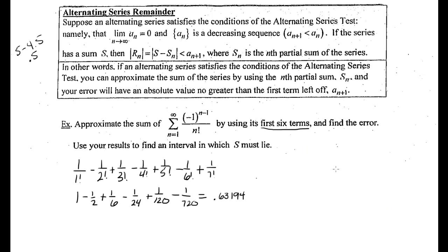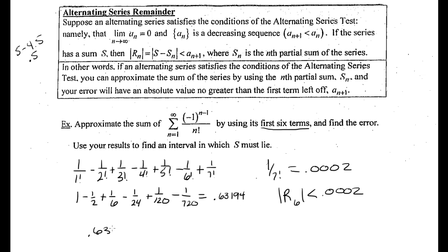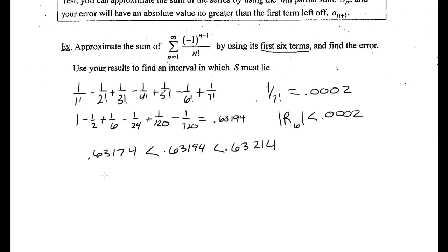Using the calculator, 1 divided by 7 factorial gives us that the error is going to be less than 0.0002. So the absolute value of the remainder of the sixth term is less than 0.0002. It also says to use the result to find an interval in which S must lie. If we subtract 0.0002 from 0.63194 we get 0.63174, and if we add 0.0002 we get 0.63214. So the sum S must lie in the interval from 0.63174 to 0.63214.